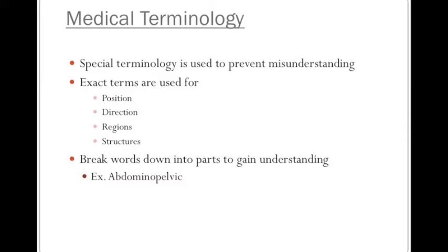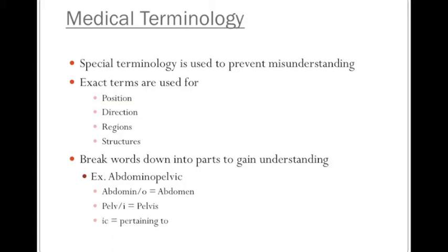The first thing you'll want to look for is the combining vowel, which is normally an O — and in this case it is an O. If you slash right through the combining vowel, it will break the word into two parts: 'abdomino' and 'pelvic.' Some of you may recall that 'abdominal' means abdomen, 'pelvic' means pelvis, and the suffix '-ic' simply means pertaining to. So 'abdominopelvic' actually means pertaining to the abdomen and pelvis.